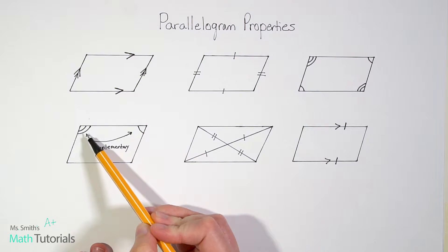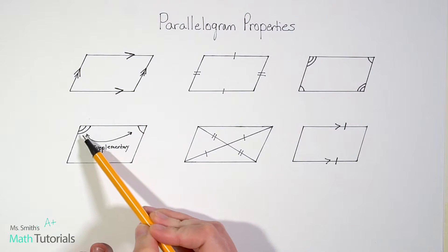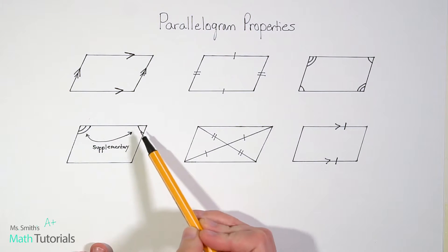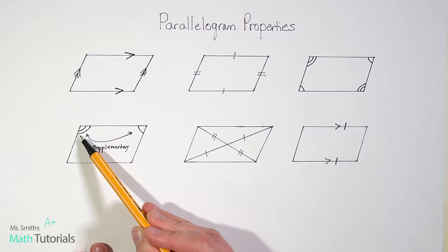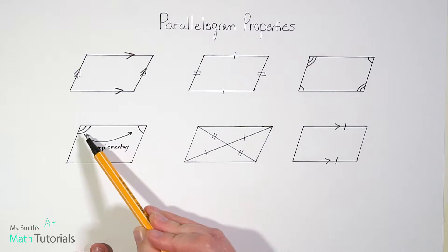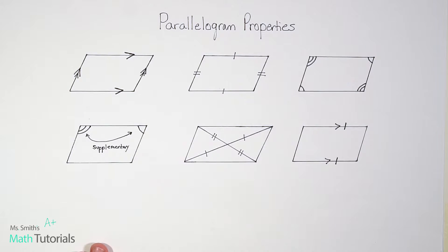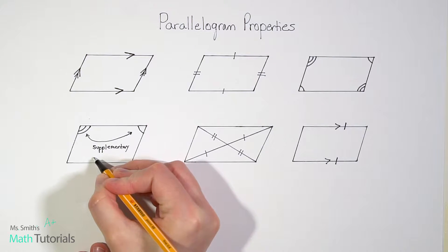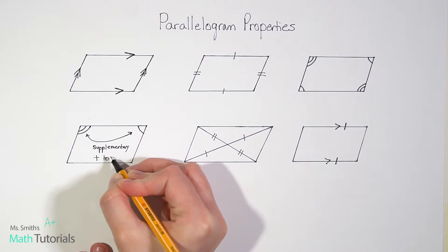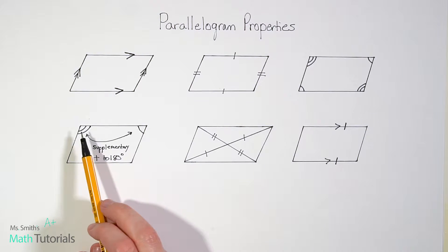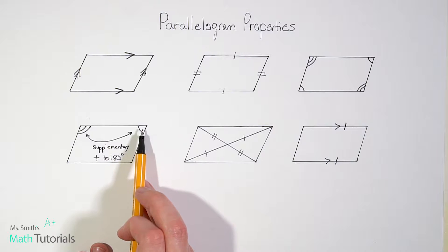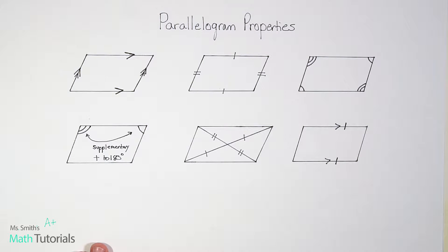For this one, notice that this angle and this angle — they're not the same in this case, they're clearly different. That's an obtuse and that's an acute angle. But if these two angles are supplementary — we have to remember what that word means — that means that they add to 180 degrees. So if you can take this angle and this angle and together they equal 180 degrees, then you've proved a parallelogram.